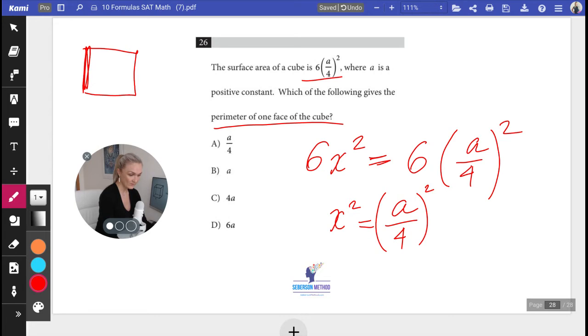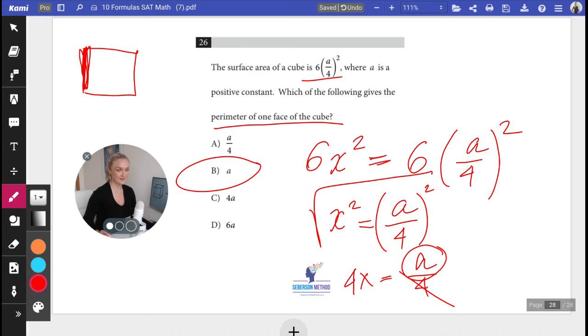All right. Now, how do I get to the X? I square root both sides. X is equal to A over 4. X is one of the sides. What's the perimeter? Perimeter is X times 4. And then we do 4X. 4 cancels out. The perimeter is going to be A. Answer choice B.